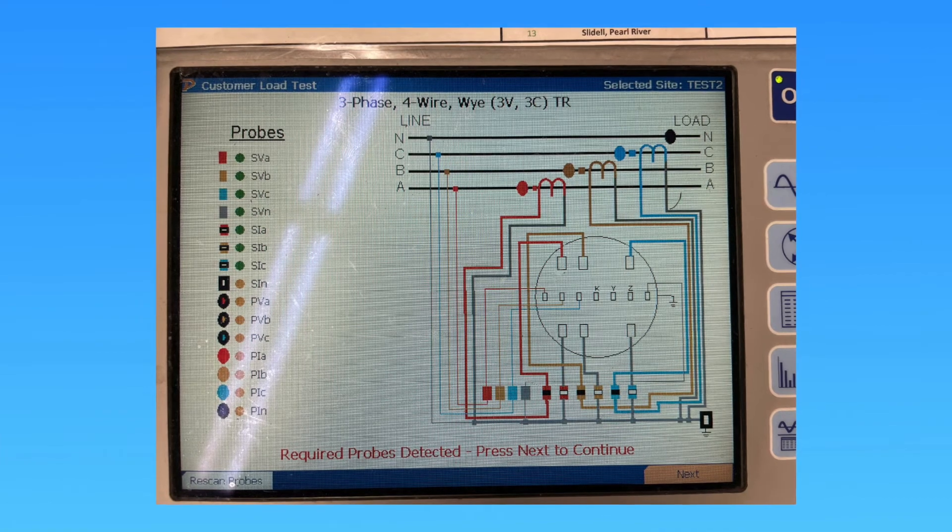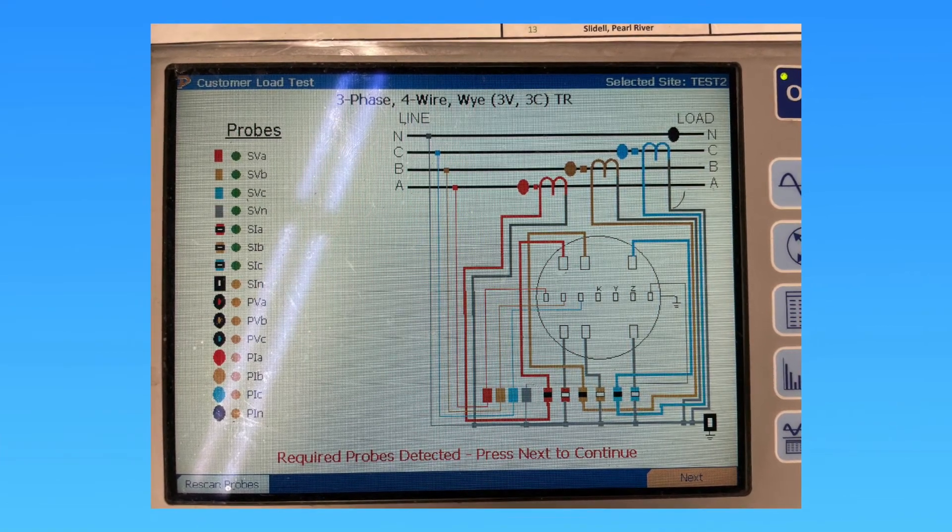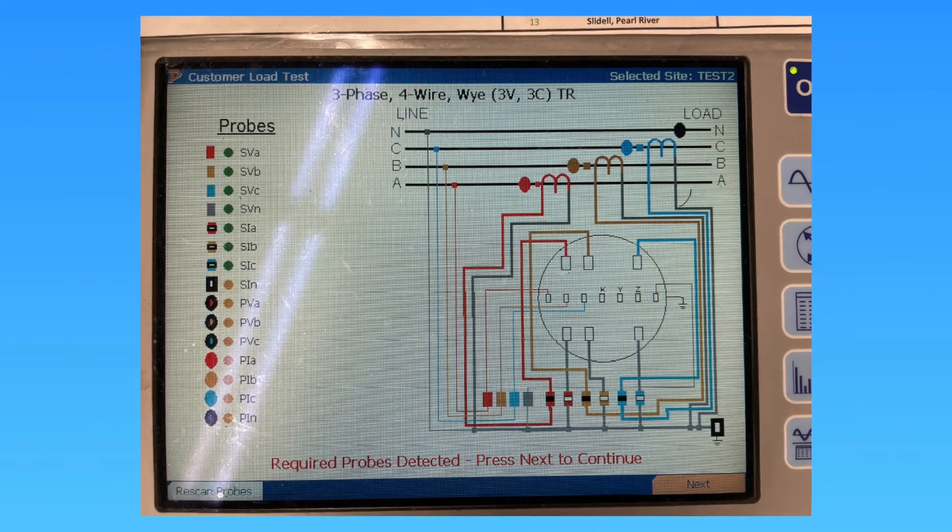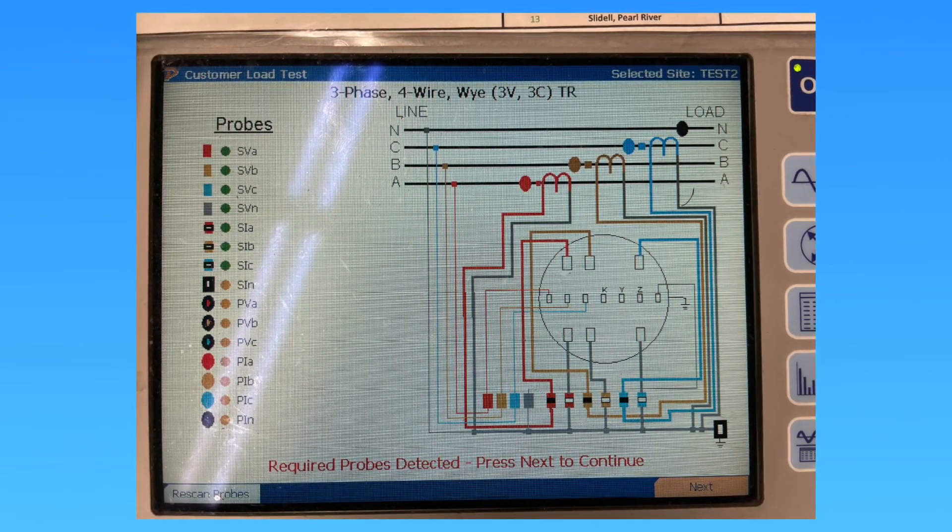So always, when in doubt, as you go through the things, stop and look at this. And this is how you wire up the Form 9 and it shows you the color codes that you use with your probes and your potentials.